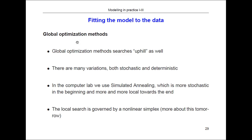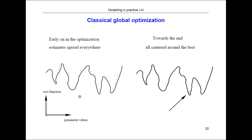Global optimization methods don't only go in the direction of best improvement — sometimes they go in a direction that temporarily gives worse agreement with the data, in order to cover the entire parameter space and not get stuck in a local minimum. There are many versions, both stochastic and deterministic. In the computer lab we use simulated annealing, which uses the non-linear simplex plus a stochastic term. More information about temperature settings is available on the course page.